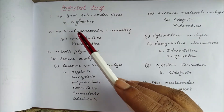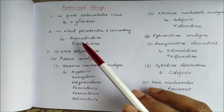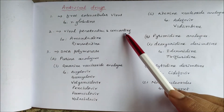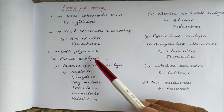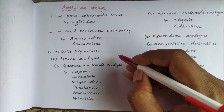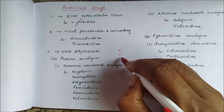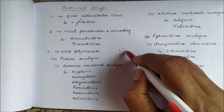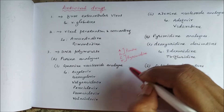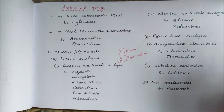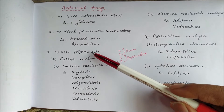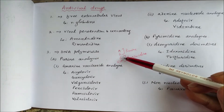Antiviral drug classification: drugs that inhibit free extracellular virus include gamma globulins. Drugs inhibiting viral penetration and uncoating include amantadine and rimantadine. Drugs inhibiting DNA polymerase work by using base analogues — DNA bases include adenine, guanine, cytosine, and thymine (purines and pyrimidines). In RNA, uracil replaces thymine. These analogues bind to DNA polymerase instead of the real base, thereby inhibiting DNA synthesis.